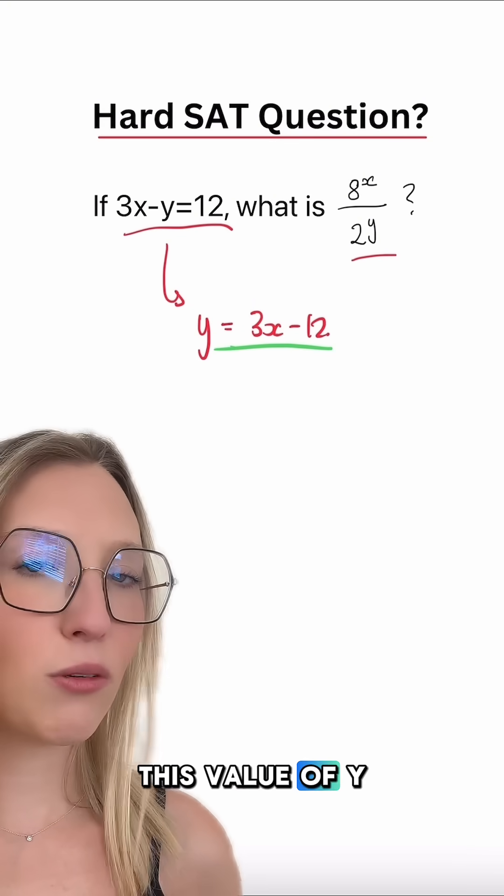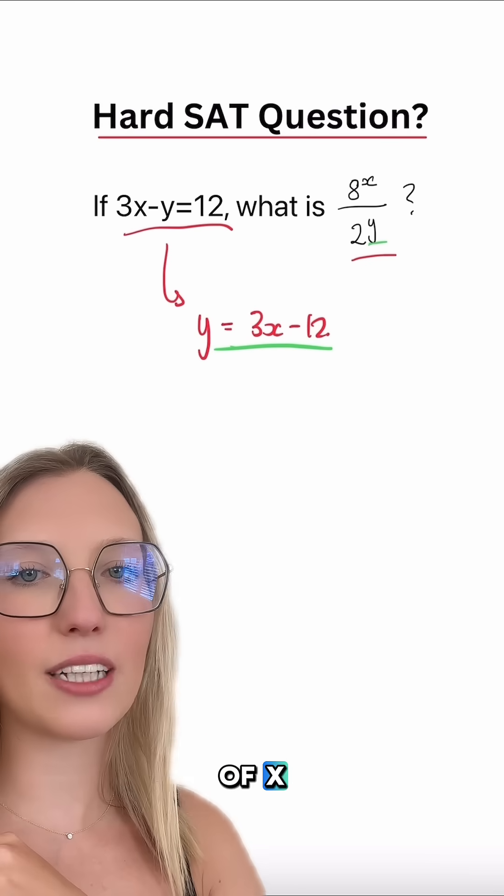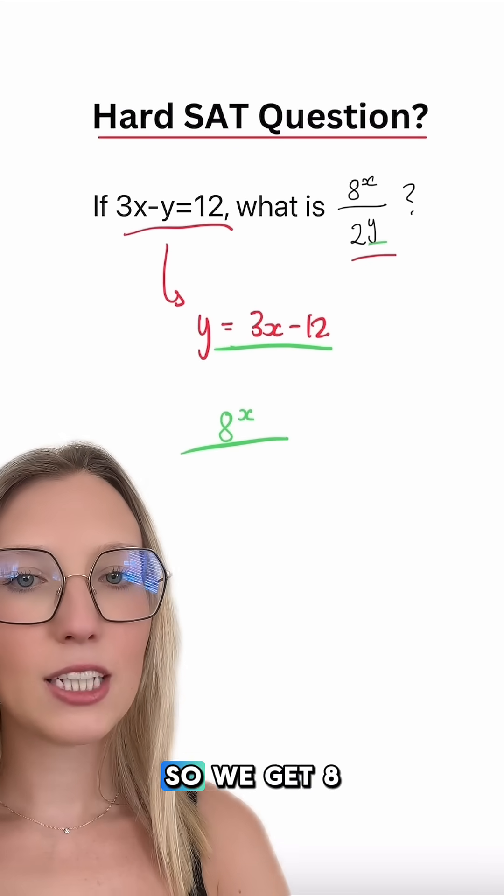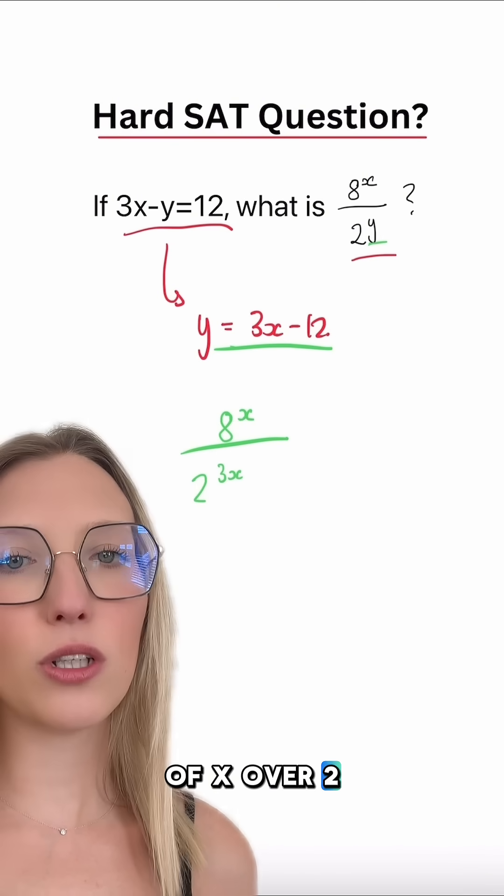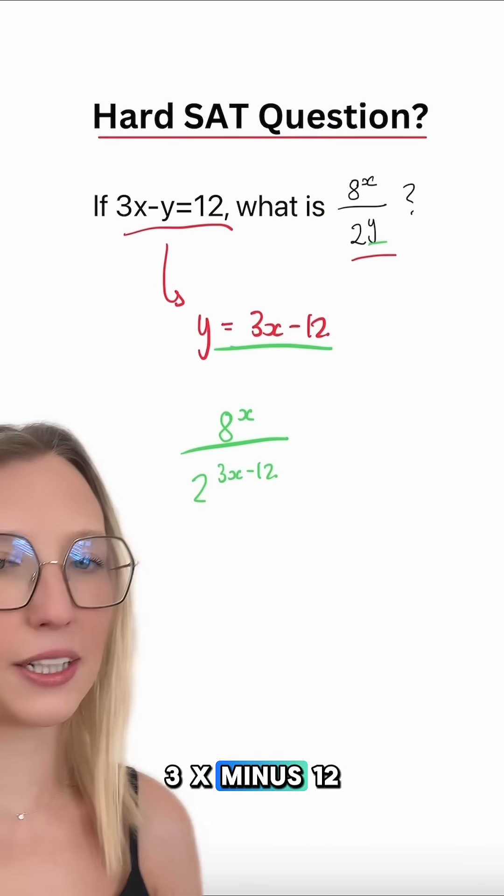We can then plug this value of y into our 8 to the power of x over 2 to the power of y. So we get 8 to the power of x over 2 to the power of 3x minus 12.